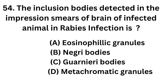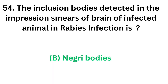Question number 54. The inclusion bodies detected in the impression smears of brain of infected animal in rabies infection is: Option A: Eosinophilic granules. Option B: Negri bodies. Option C: Guarneri bodies. Option D: Metachromatic granules. The correct answer is Option B, Negri bodies. Negri bodies are the inclusion bodies detected in the impression smears of brain of infected animals in rabies.